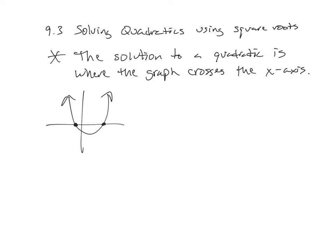There are two solutions in most cases. It is possible to have no solution, and it is possible to have just one solution, but most problems are going to have two solutions. They could both be positive, both be negative, or one of each. So where the graph crosses the x-axis — we're really looking at x-intercepts. We talked about that in Chapter 8.